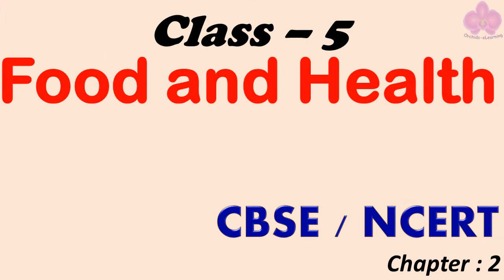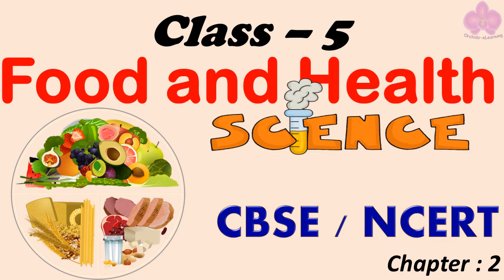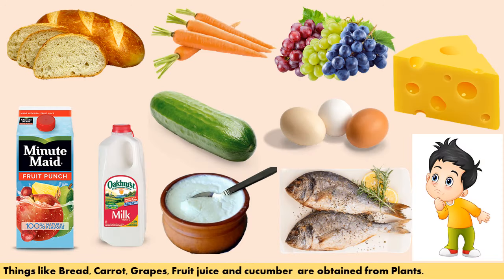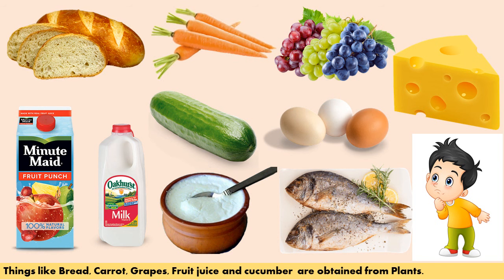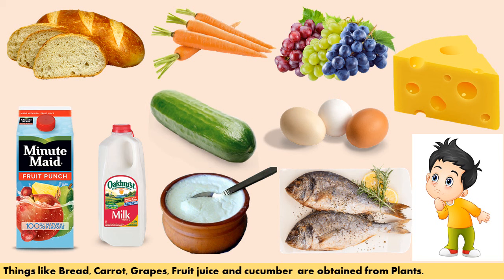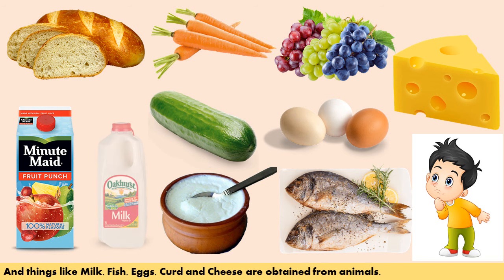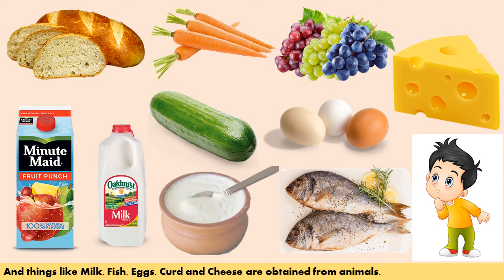Food and Health — Class 5 Science. Children, look at the picture given. You can see the different types of food. Things like bread, carrot, grapes, fruit juice, and cucumber are obtained from plants. Things like milk, fish, eggs, curd, and cheese are obtained from animals.